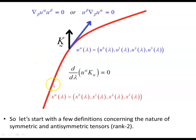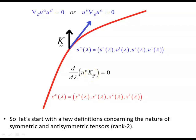When a Killing vector is involved — representing an underlying symmetry on the manifold — the four-velocity (or four-momentum) in the direction of a Killing vector is conserved, and hence d/dλ of this scalar product is zero. For instance, in the Schwarzschild metric the metric is independent of time, giving a Killing vector in the time direction, and the four-velocity dotted with that gives conservation of energy.